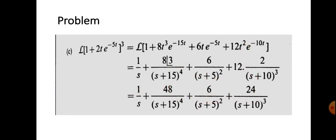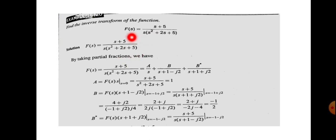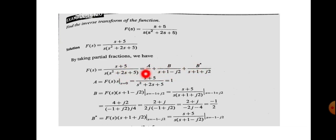Find the inverse Laplace transform of F(s) = (s+5)/[s(s²+2s+5)]. Use partial fraction expansion. The denominator s²+2s+5 has roots s = -1±2j, so write F(s) = A/s + B/(s+1-2j) + B*/(s+1+2j). A is found by multiplying F(s)·s and setting s=0, yielding A=1.